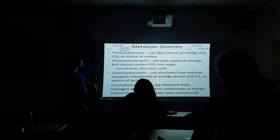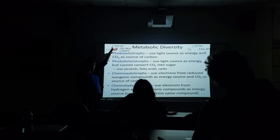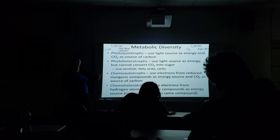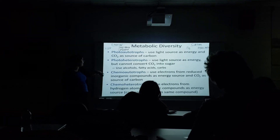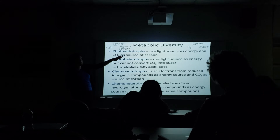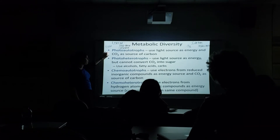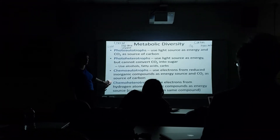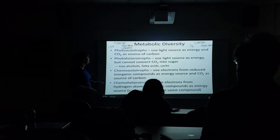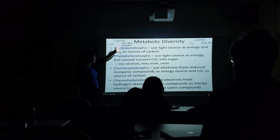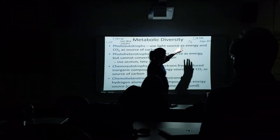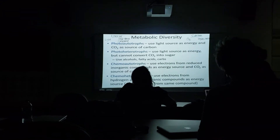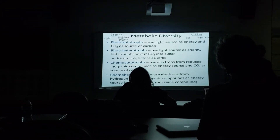Chemo-heterotrophs are going to use some compounds for energy and some organic compounds to get carbon. They can't do photosynthesis and can't just breathe in carbon dioxide. So: photo-autotrophs, photo-heterotrophs, chemo-autotrophs, chemo-heterotrophs. What about people — which group do we fall into? Chemo-heterotrophs.